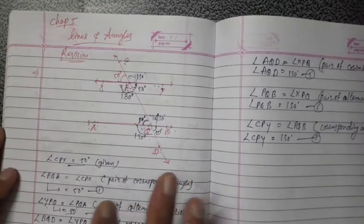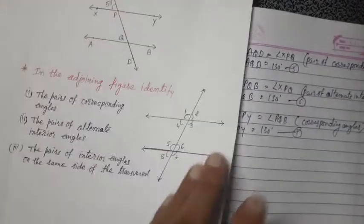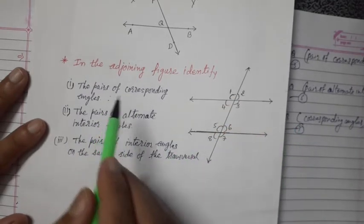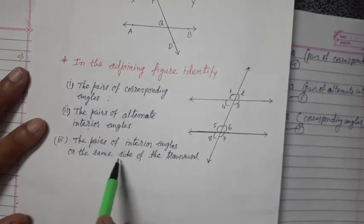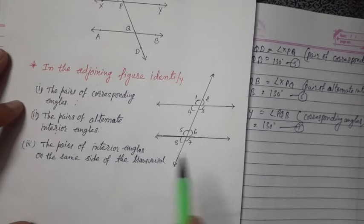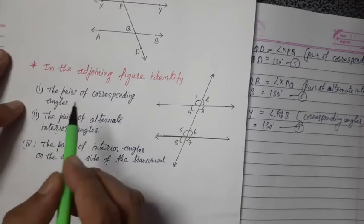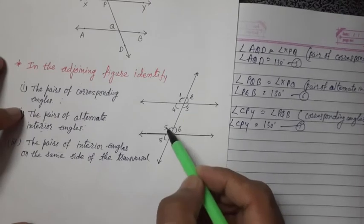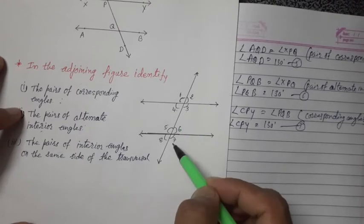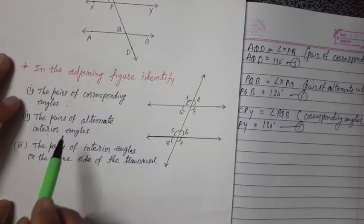Okay, so measurement of all angles is complete — some are 130 degrees and some are 50 degrees. You can also prove this yourself. If you have any problem, see this video and try to solve it. One more question: in the given figure, write down the pairs of corresponding angles and pairs of angles on the same side of the transversal.